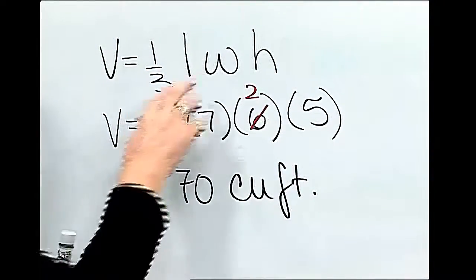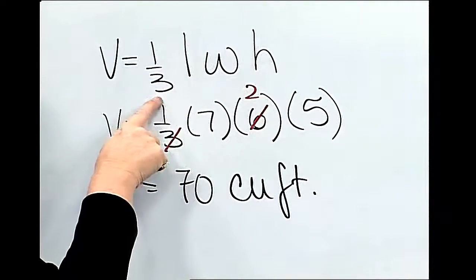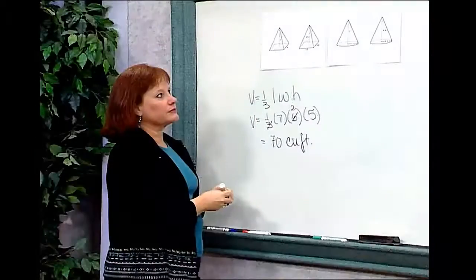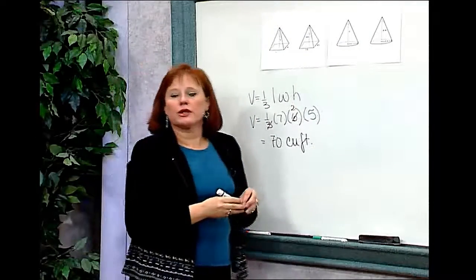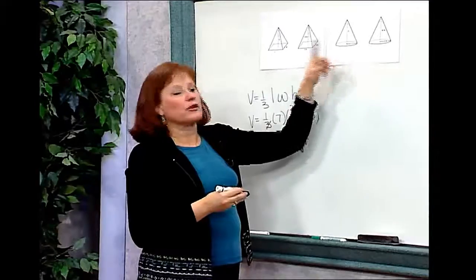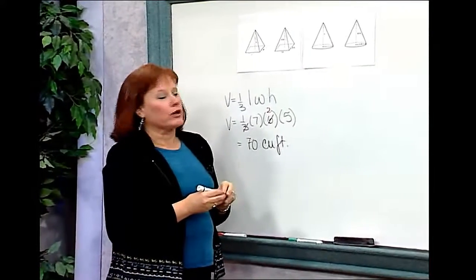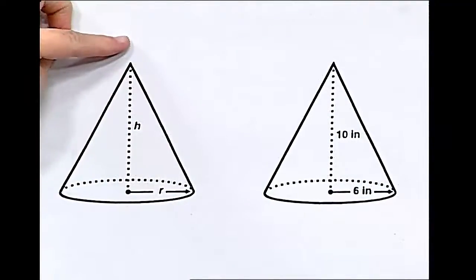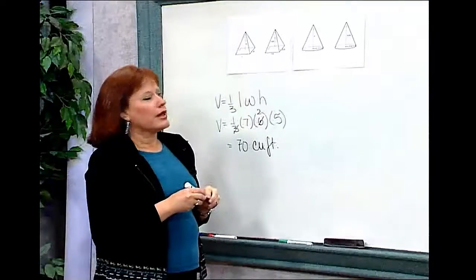I found the area of the base, multiplied it by the height, and multiplied it by one-third to get the volume of that particular pyramid. A cone is a special kind of pyramid — it's a pyramid with a circular base. We know it's a pyramid because it has a base and it comes to a point, so it operates exactly as other pyramids do.